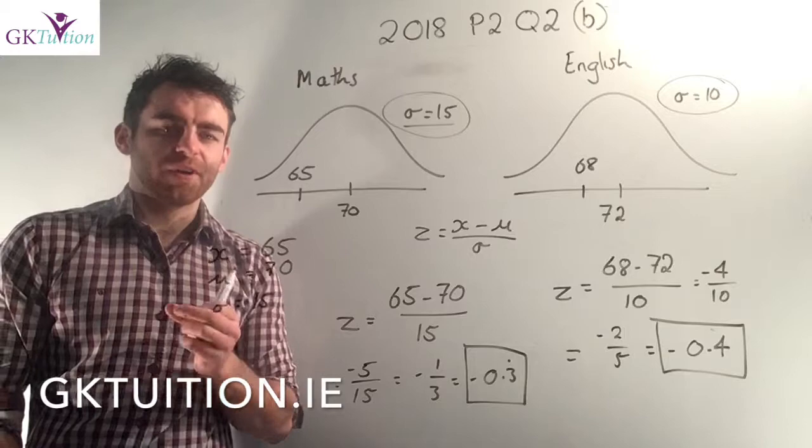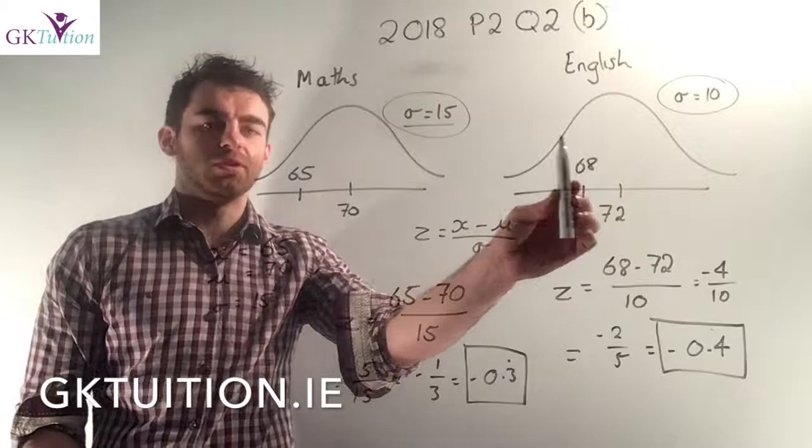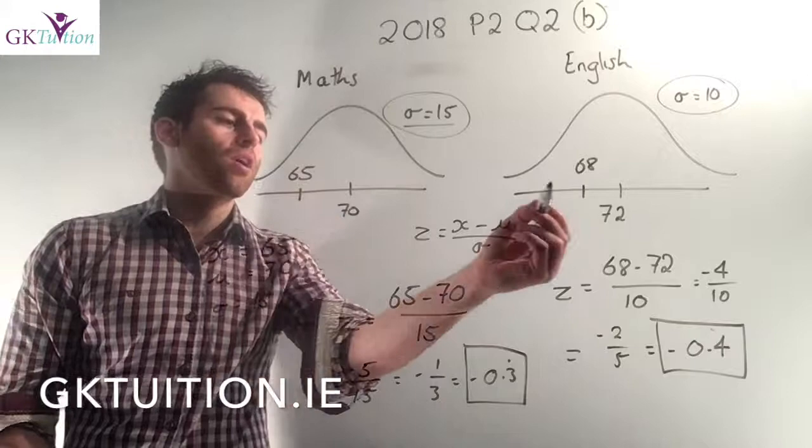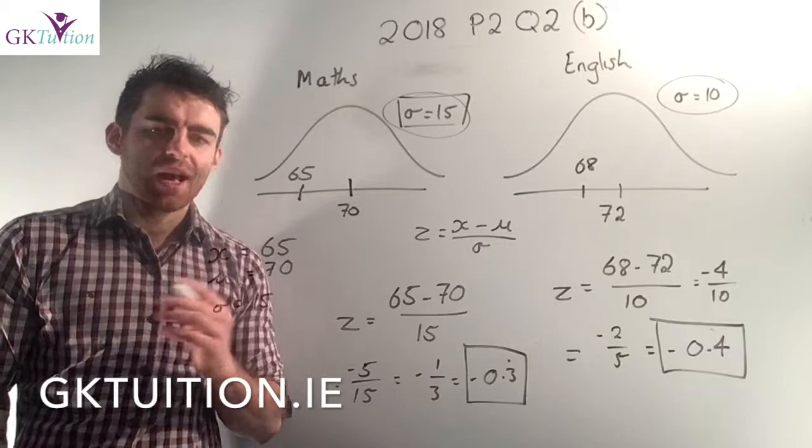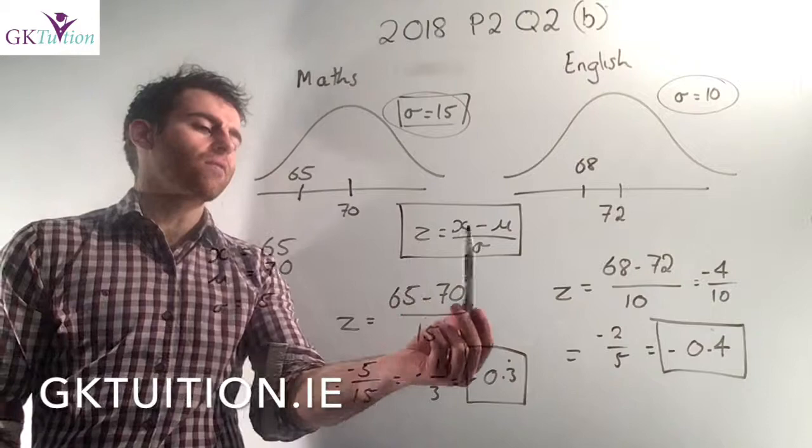We're asked to figure out, relative to all the other students in the class, in which test did Mary do worse. We need to turn her score of 65 into a z-score and her score of 68 into a z-score — comparing her result to the average, taking into account the variability of the data. Luckily there's a formula for this in our log tables: the standardizing formula.